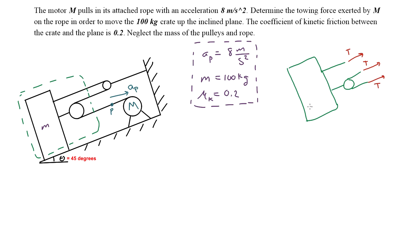There is friction acting on the surface, so there is a frictional force FK acting in the opposite direction of movement. Since the crate is moving up the incline, the kinetic friction acts in the opposite direction. We also have a weight force W, and the angle it makes with the vertical line is theta — using the basic idea of inclined planes.